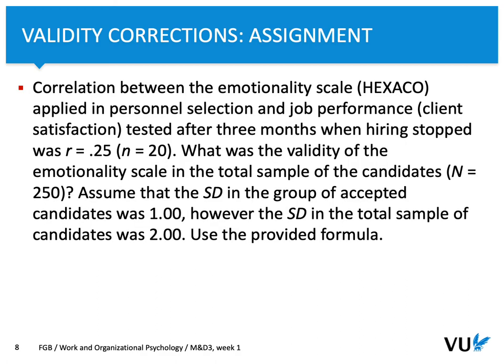Let's do an assignment. Assume that the correlation between the emotionality scale of the HEXACO applied in personnel selection and job performance — in this case client satisfaction, tested after three months of hiring — was 0.27. There were 20 candidates selected for this job. What was probably the validity of the emotionality scale in the total sample of 250 candidates? We can assume that the standard deviation in the group of accepted candidates was 1.0, however in the total sample it was higher — it was 2.0.